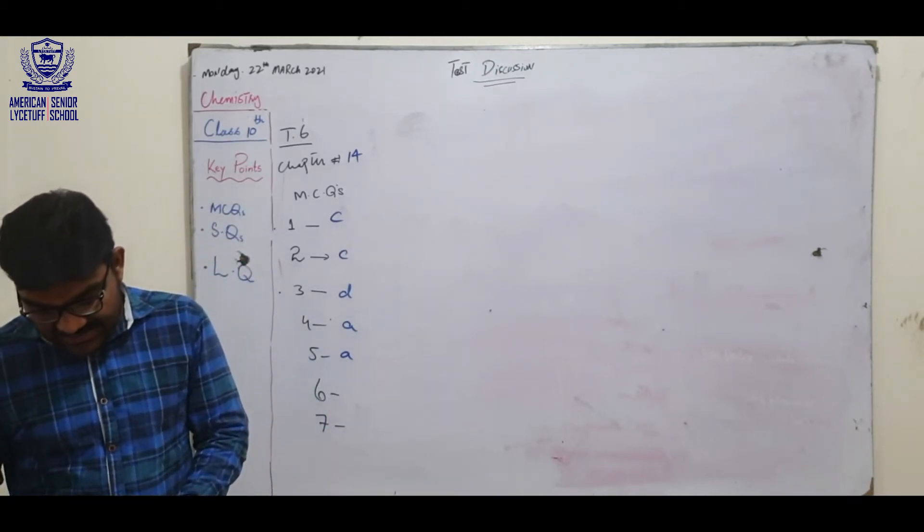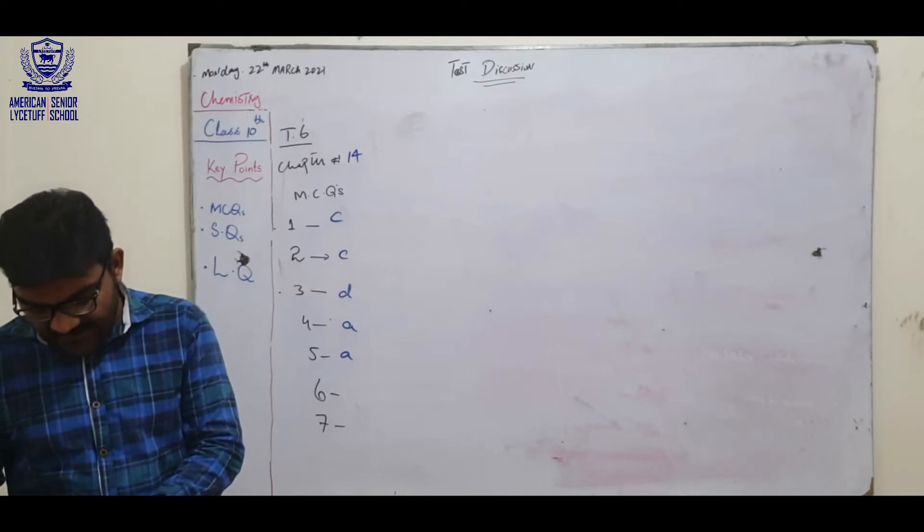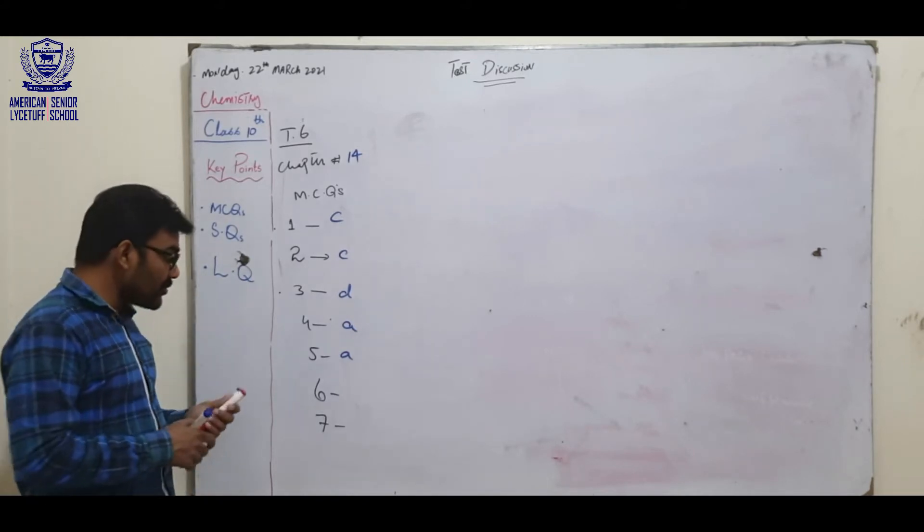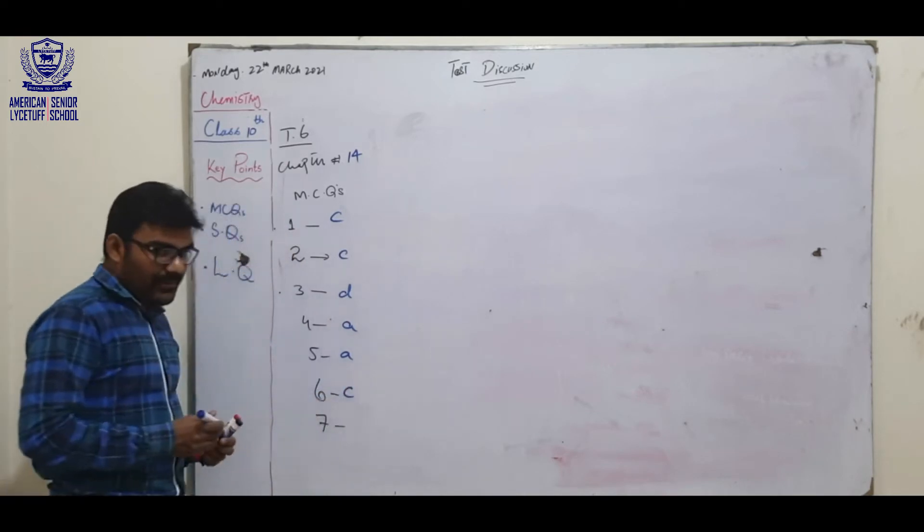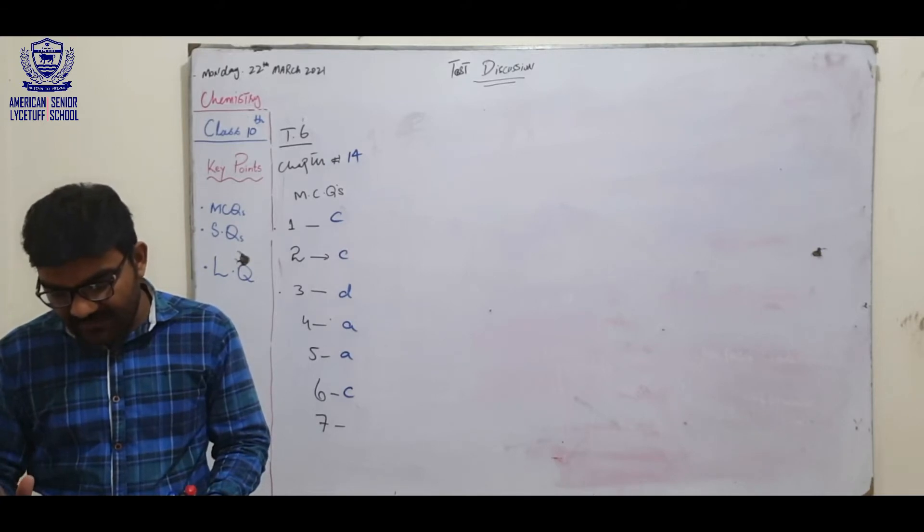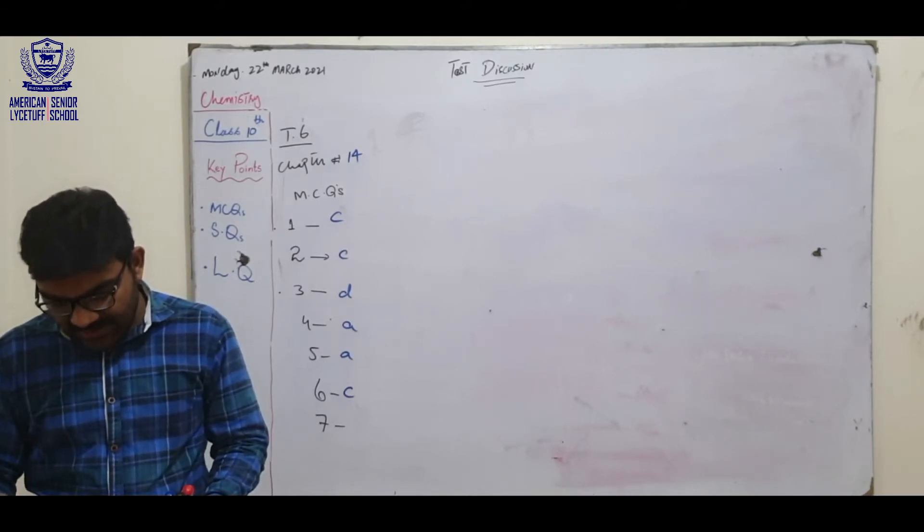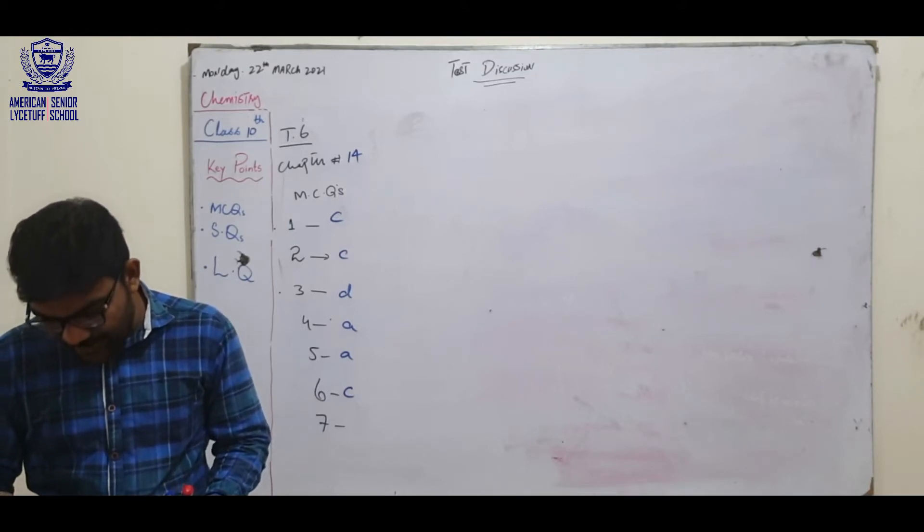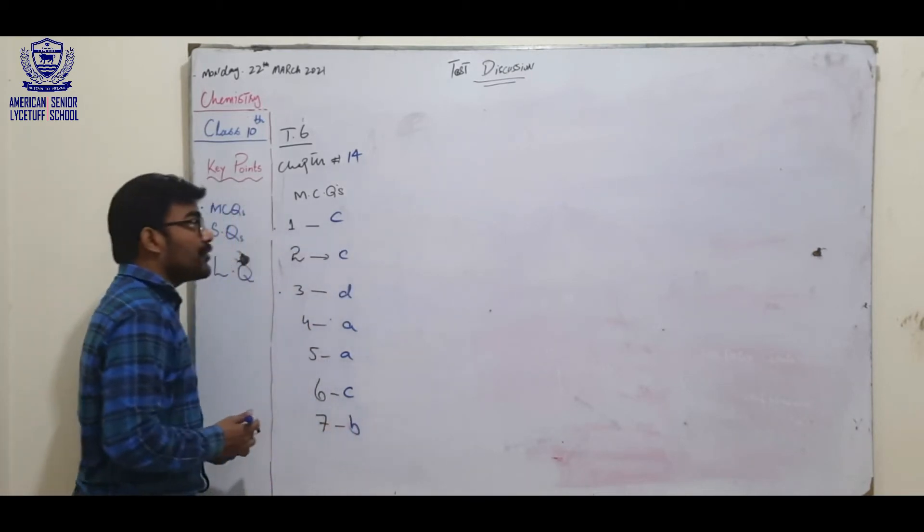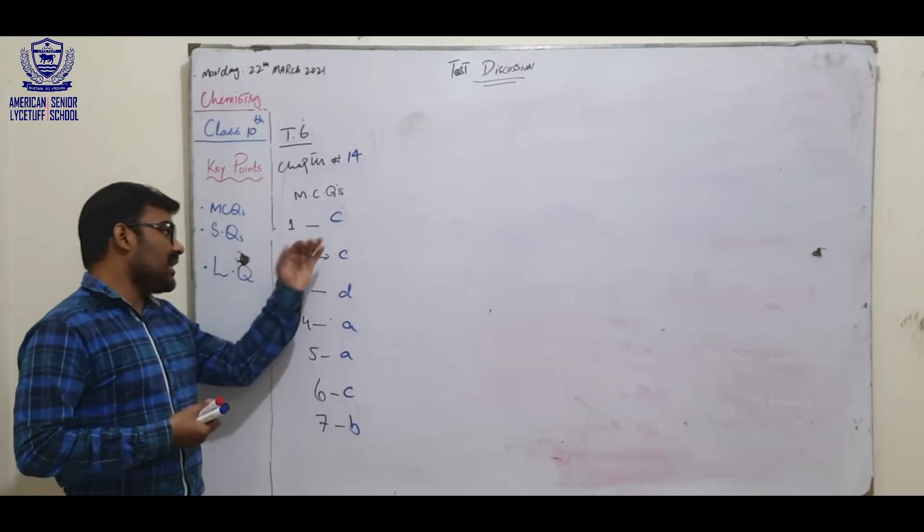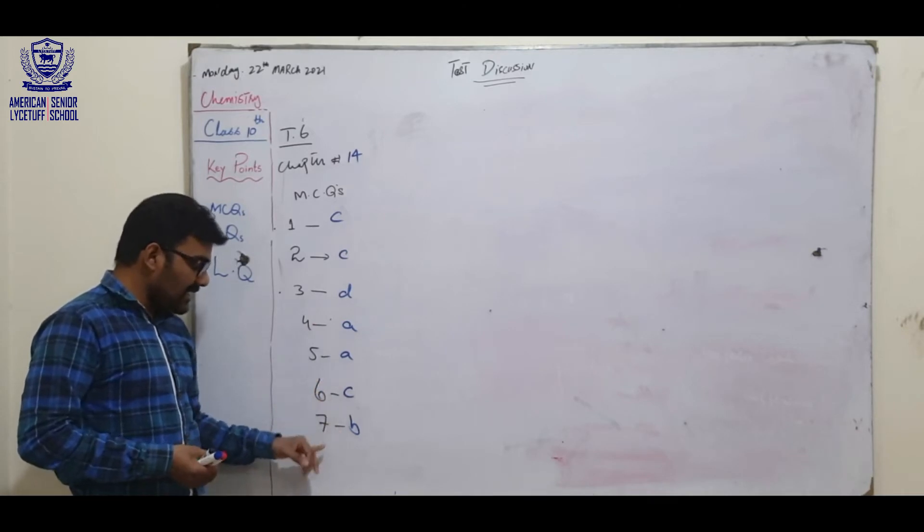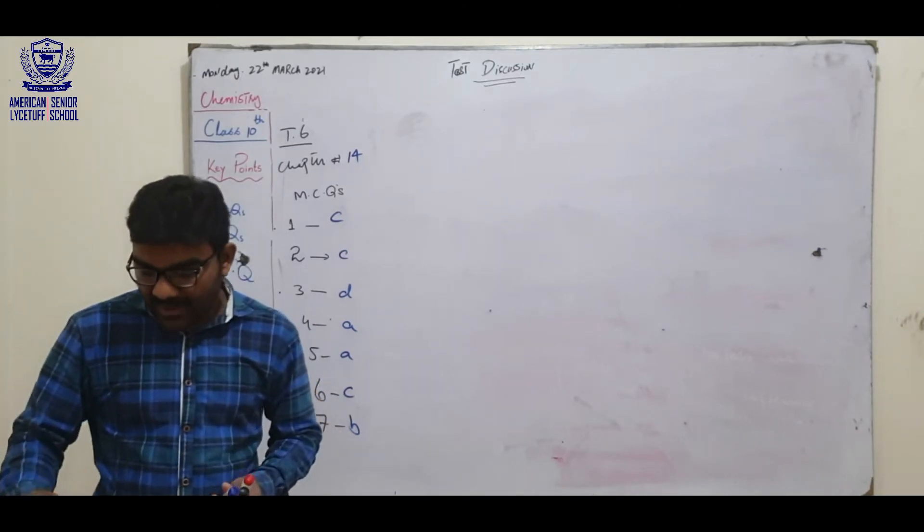Acid rain affects the aquatic life by clogging the fish gills because of aluminum metal. So answer is C option, aluminum metals. Next and last, effect of ozone depletion are following except the one. All are given except one, so answer is B option, increase crop production. The answers are: first C, second C, third D, fourth A, fifth A, sixth C, and seventh is B. Next are short questions.